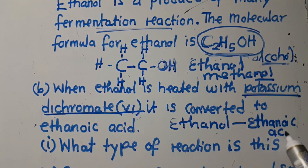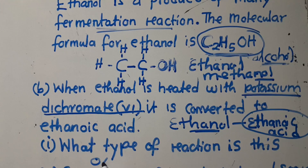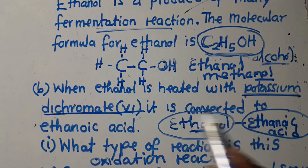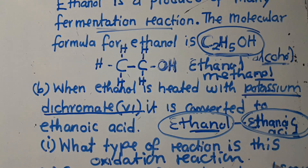The question is asking: what type of reaction is this, where ethanol is converted to ethanoic acid? An alcohol has now become a carboxylic acid. This process is called an oxidation reaction. When you expose an alcohol to atmospheric oxygen in the presence of this catalyst, the alcohol changes to a carboxylic acid. So ethanol is changed to ethanoic acid through oxidation.